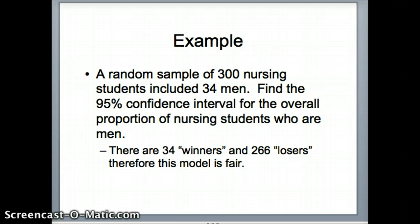Winners in this case, what we're measuring, that's men in nursing. We have 34 winners. How many of the folks are losers? Not to be sexist, but these are folks who are not men, i.e., women who are in nursing. Winners is what we want to measure. Losers are what we're not measuring. 34 winners, 266 losers, both very large. So it's fair to use this model.